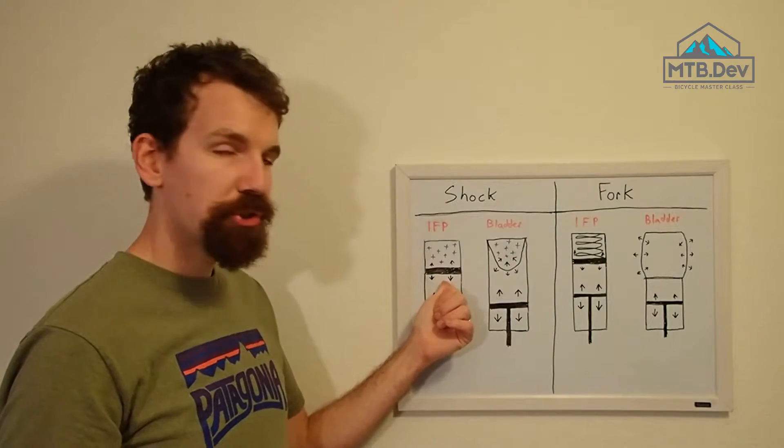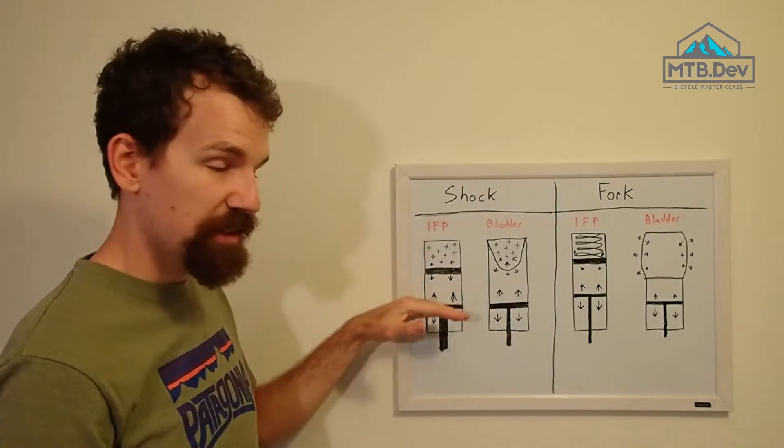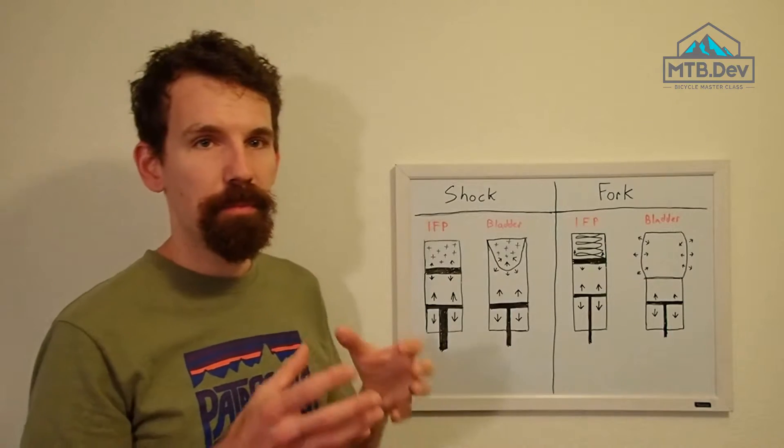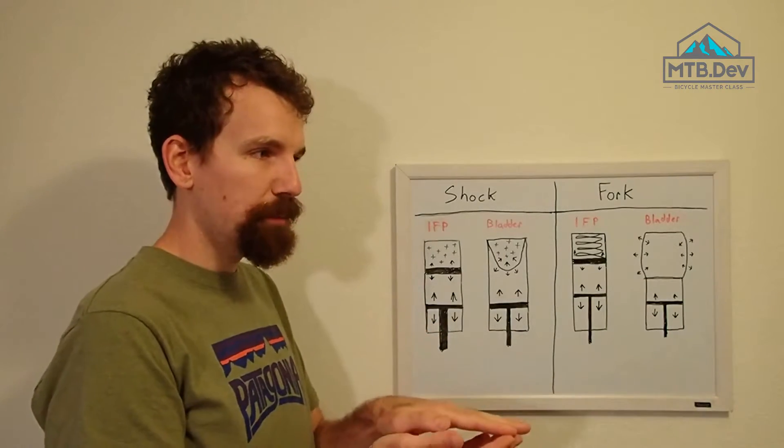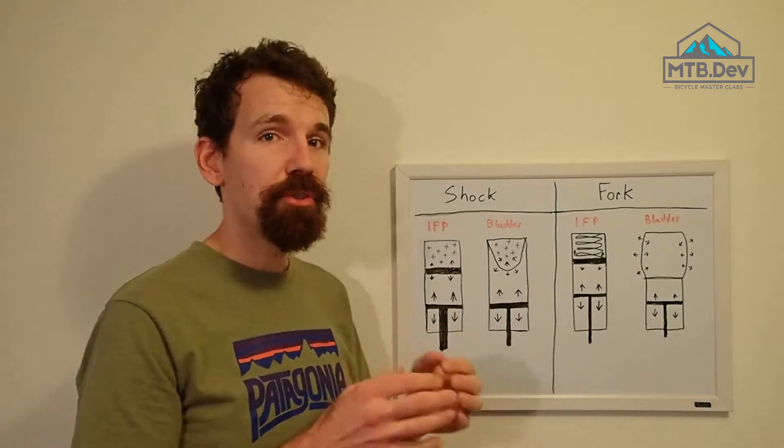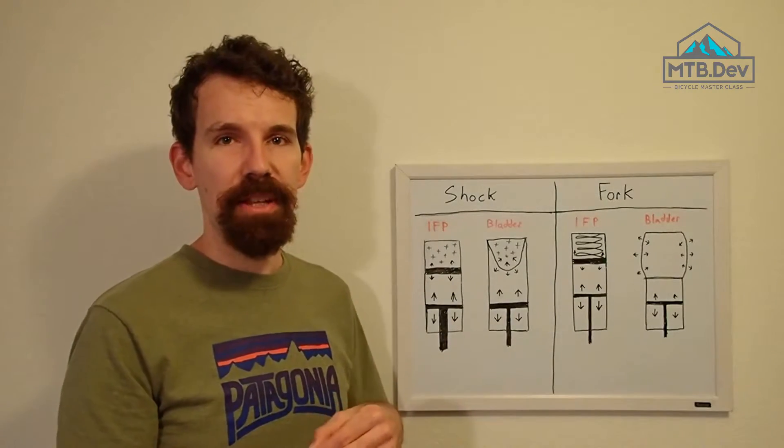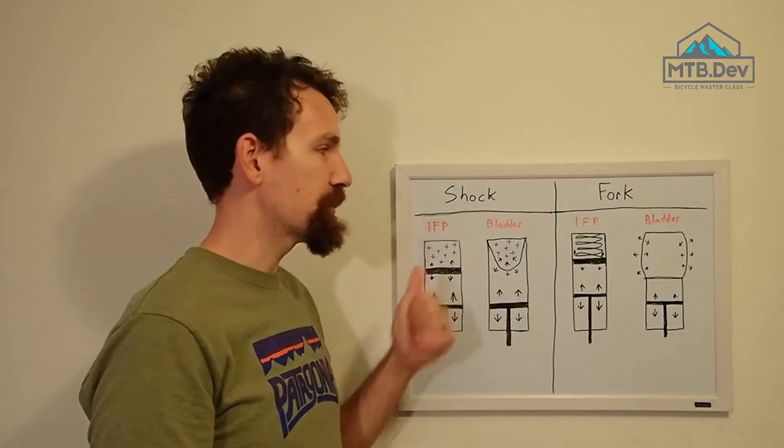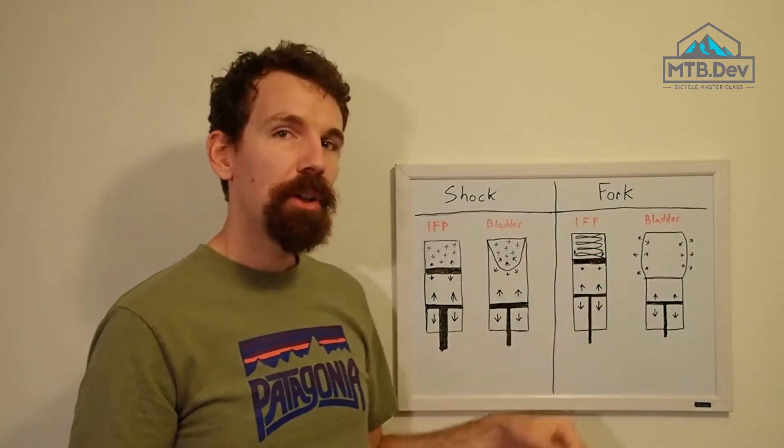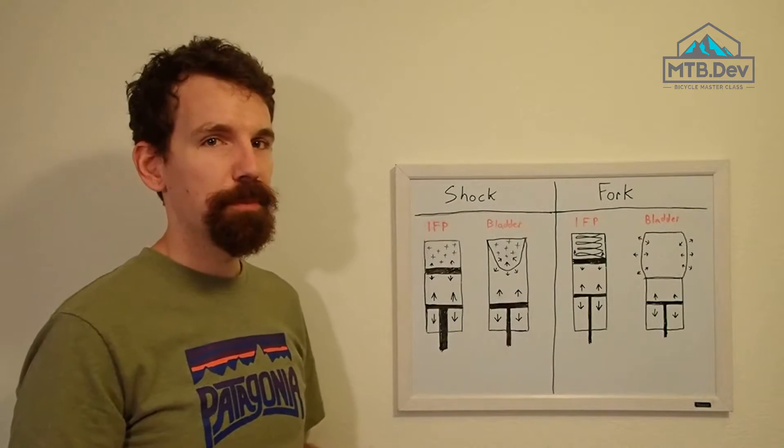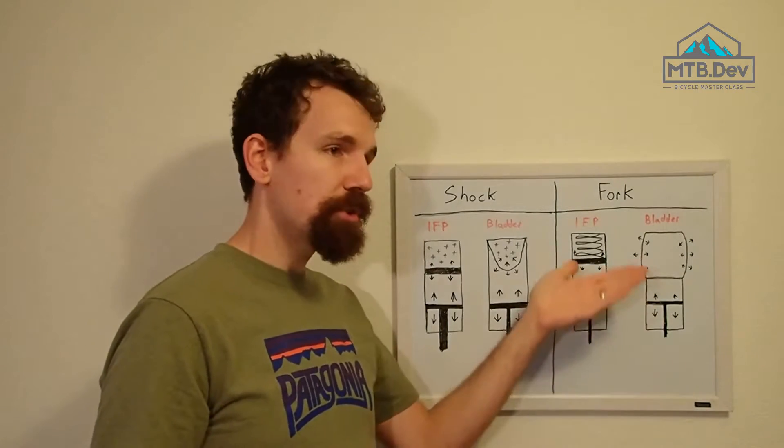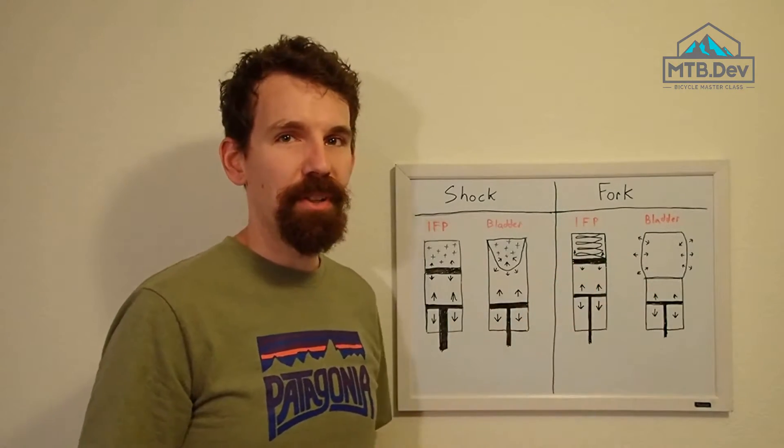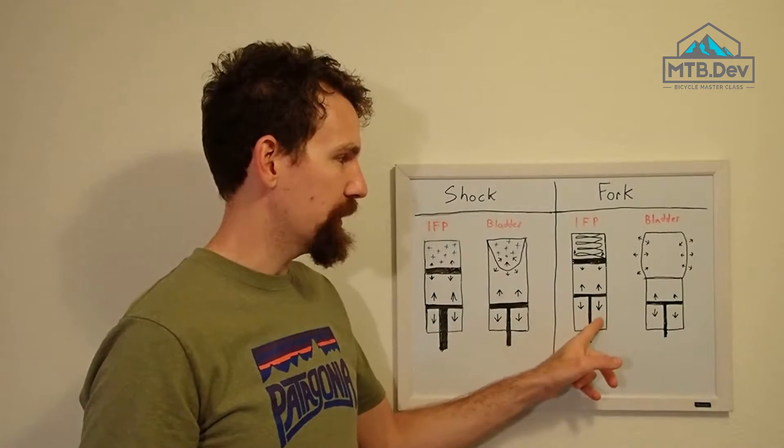Now with a shock, as the IFP moves into that compressed gas chamber, it's going to contribute to the overall progressivity of the shock because it's ramping up here as well. In a fork, you can use a spring, which reduces the progressive component and gives you a more linear feel throughout the system.